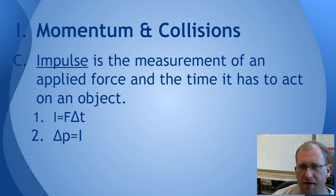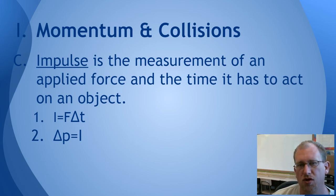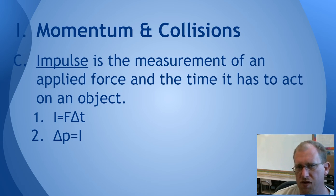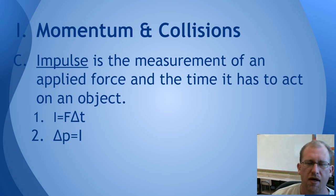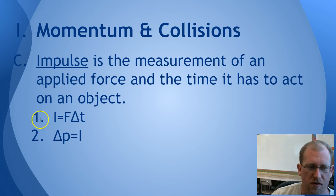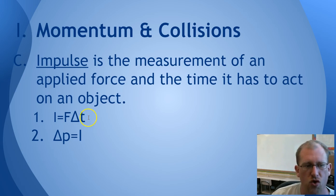The longer that the force is applied to an object with momentum, the more that object's momentum changes. We use a word to talk about how long the force was applied — that is the idea of impulse. Impulse is the measurement of an applied force and the time it has to act on an object. If you apply 20 Newtons for half a second, you're not going to accomplish as much changing of momentum as if you apply that 20 Newton force for a hundred seconds. The longer you push on something, the more of a difference you're going to make. So impulse I is the force times how long it's going to be applied, and the net change in momentum equals impulse.